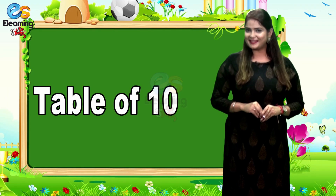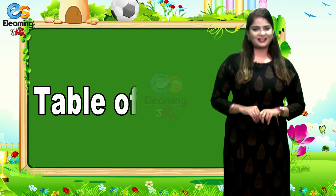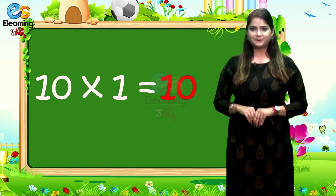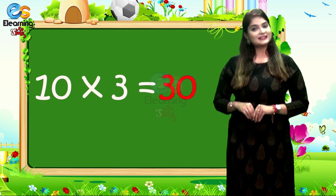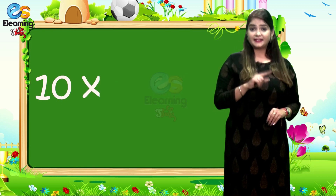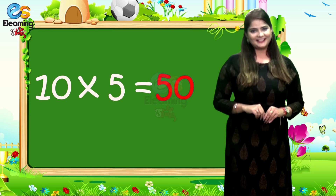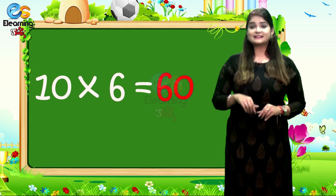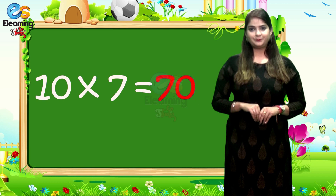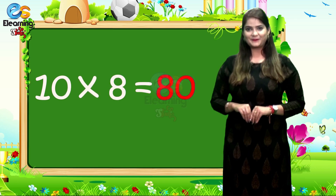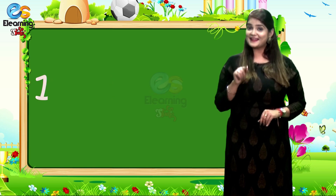Today children, we will memorize the table of 10. How many fingers do we have in both hands? 10. So let's begin. 10 1s are 10. 10 2s are 20. 10 3s are 30. 10 4s are 40. 10 5s are 50. 10 6s are 60. 10 7s are 70. 10 8s are 80. 10 9s are 90. 10 10s are 100.